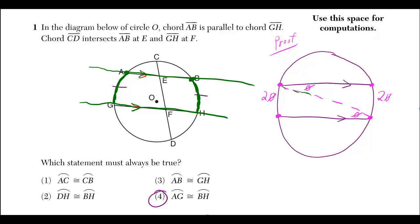You draw in a dotted line going from this point to that point. And then you realize you actually have alternate interior angles between this one and that one. So if that's true, then that means those angles are equal.